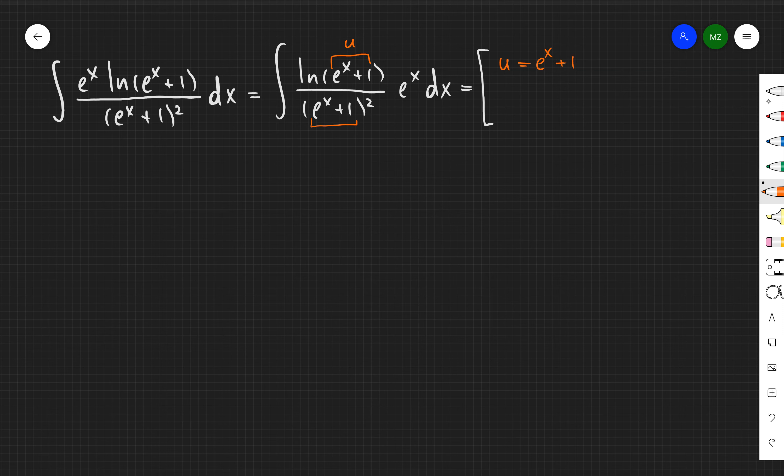In this case you can see I don't like that e to the x plus one inside my logarithm. So that's why I'm going to set u is equal to e to the x plus one. So du is equal to e to the x times dx.